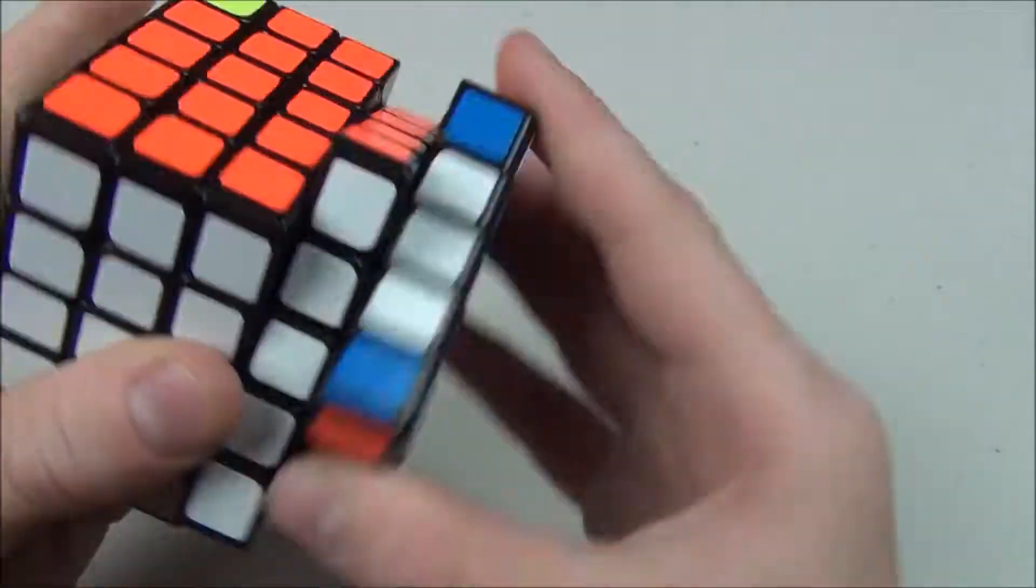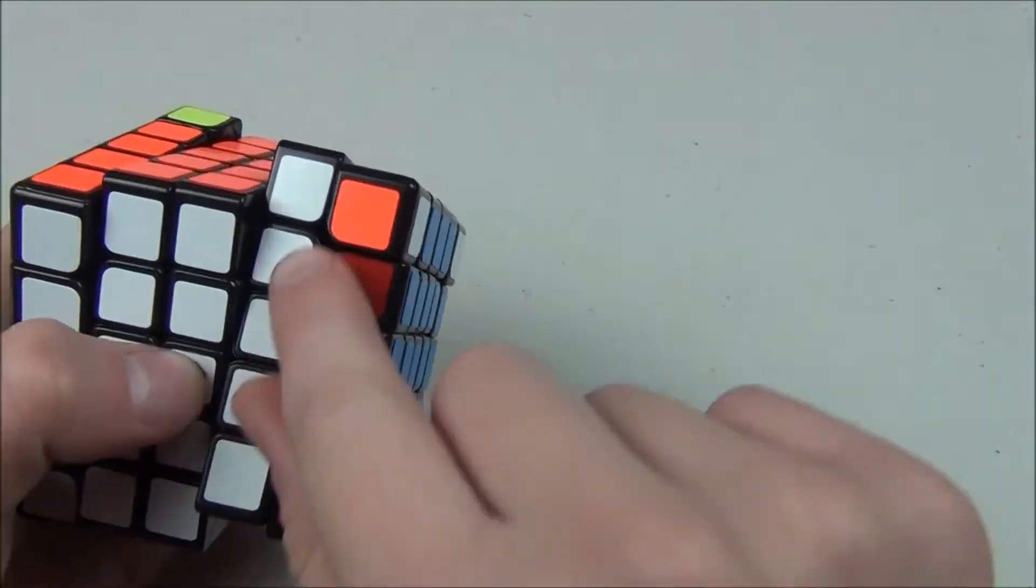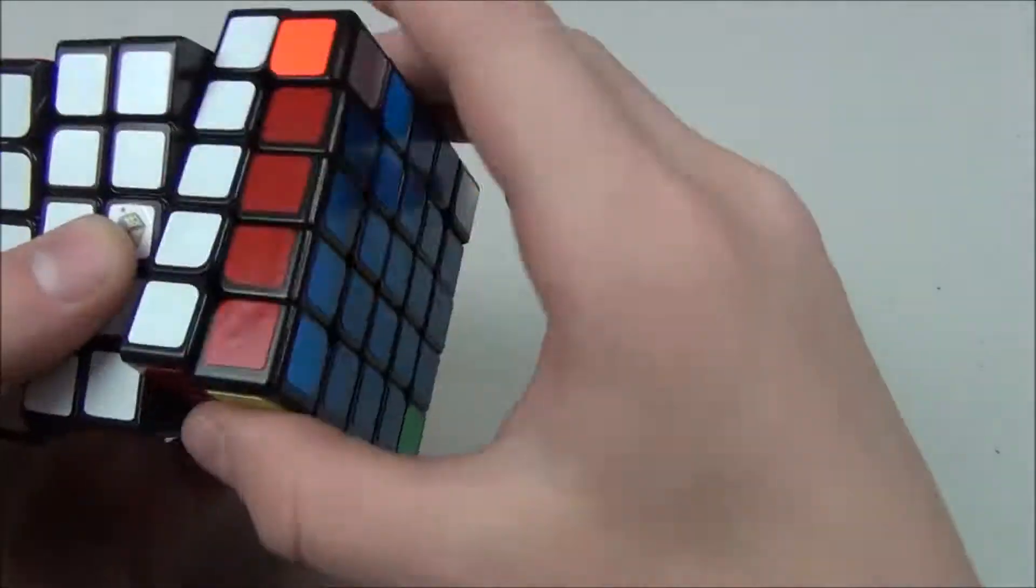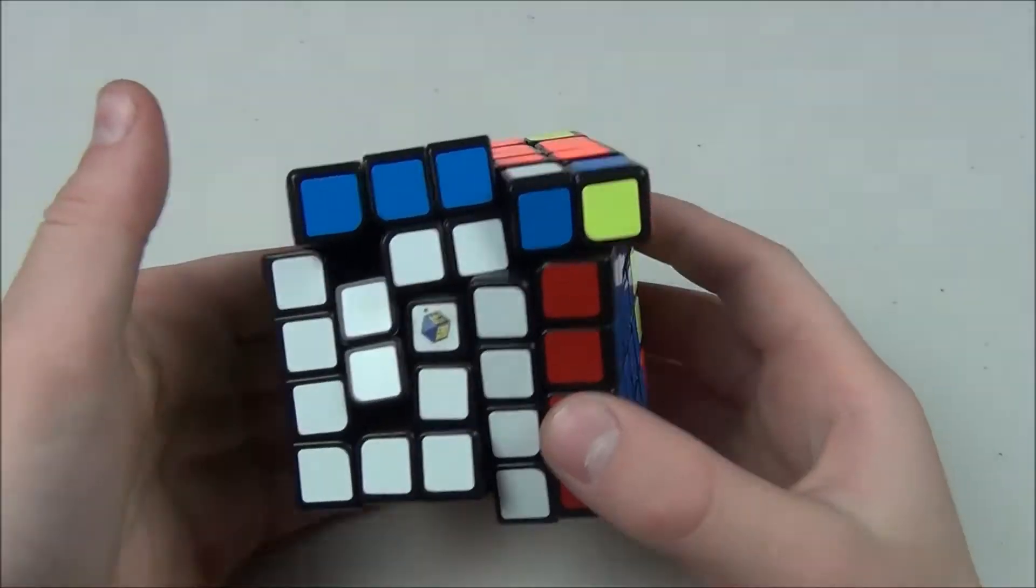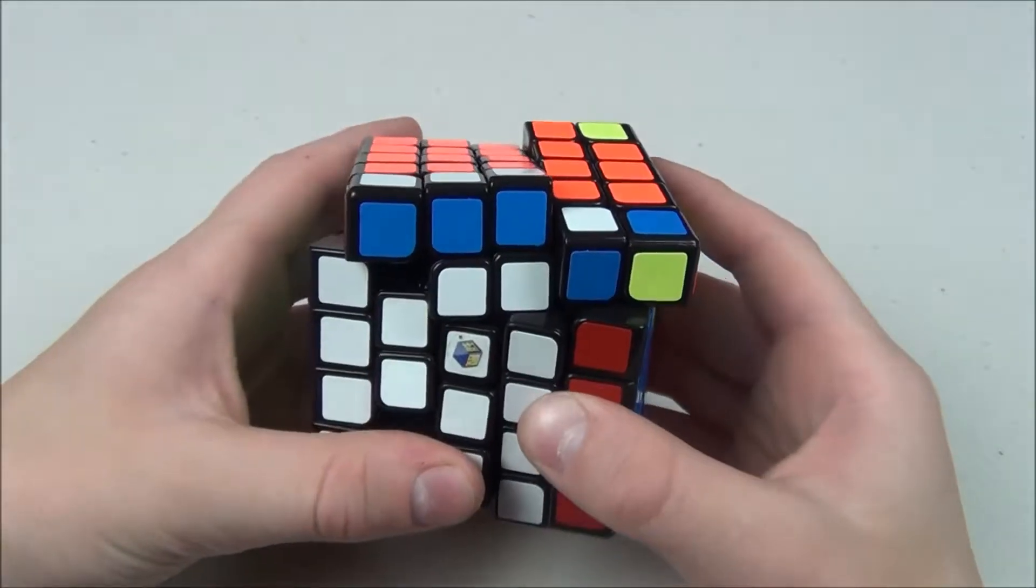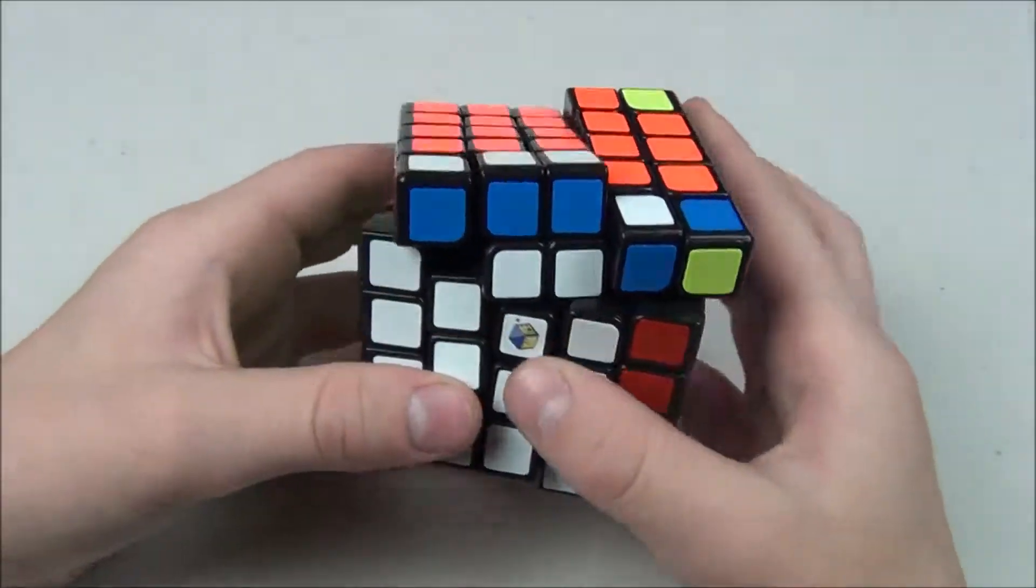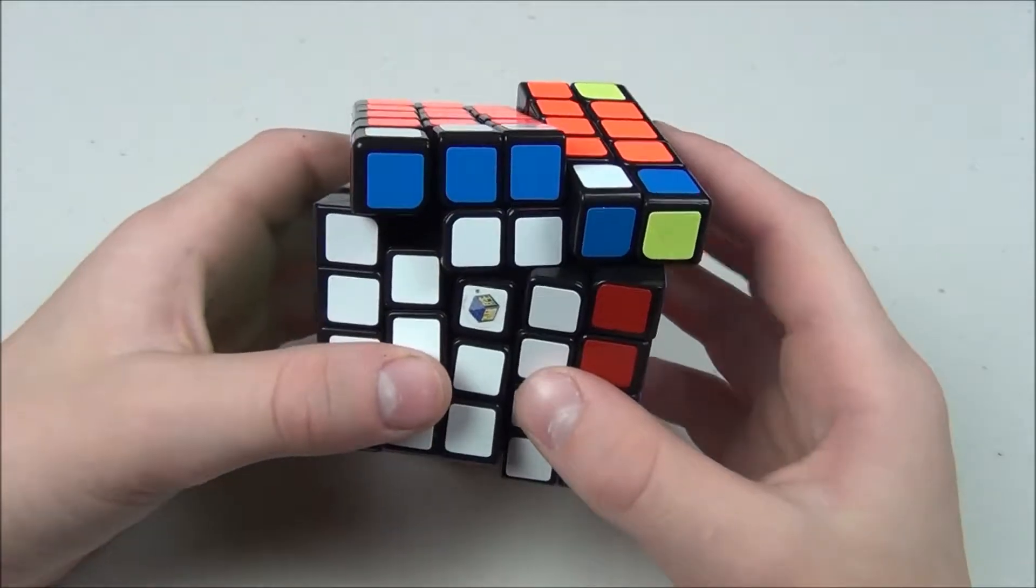I'm noticing, like when I'm trying to do a sexy move, this layer really, really wants to come out like that. I have no idea what I just did there. Alright, so we are having a bit of a problem. I want to go ahead and fix whatever I just did there off camera.